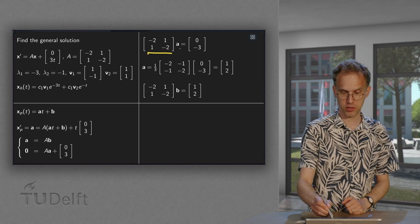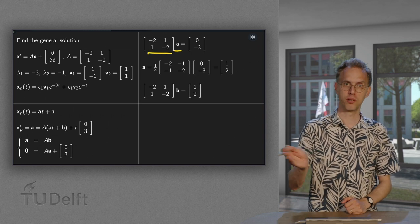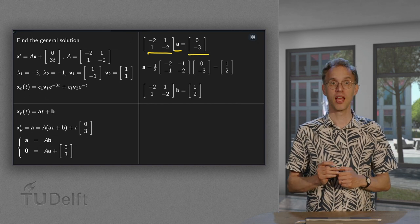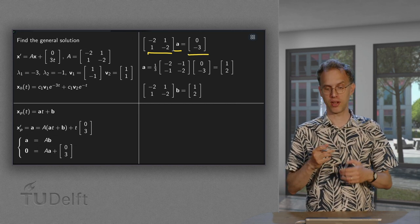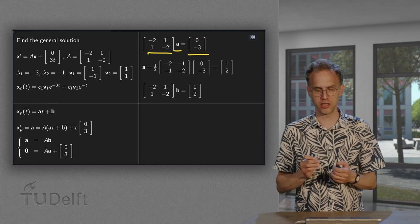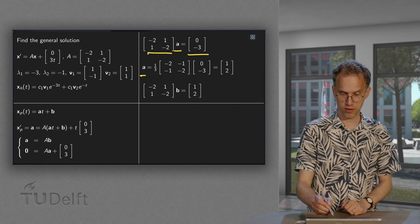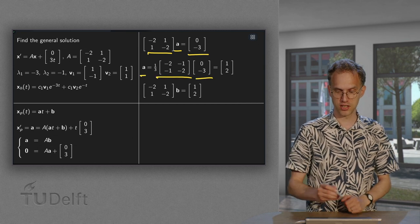So, we have matrix A times unknown vector a equals, bringing the (0, 3) to the other side, (0, -3). And then we can solve for a. Okay, you can do row reduction, but, well, it's only 2 by 2. So, let's just use the inverse. So, a is the inverse of this matrix A times this (0, -3).